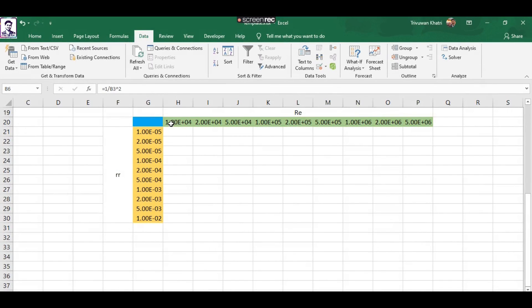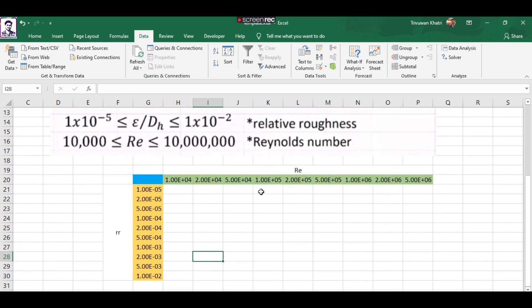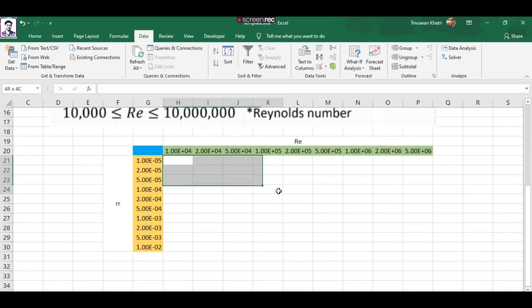Here I have arranged the Reynolds number in these rows and relative roughness in this column. What I want to do is find out the respective roughness coefficient values between this Reynolds number and relative roughness.